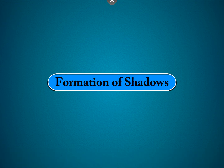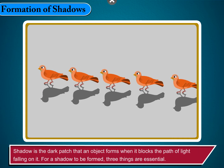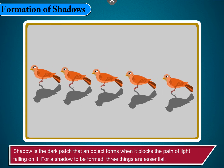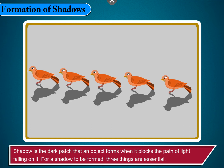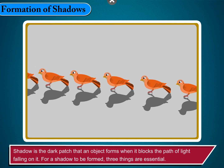Formation of Shadows. We know that light travels in a straight line. If an object blocks or stops the path of the light, shadows are formed. Shadow is the dark patch that an object forms when it blocks the path of light falling on it.